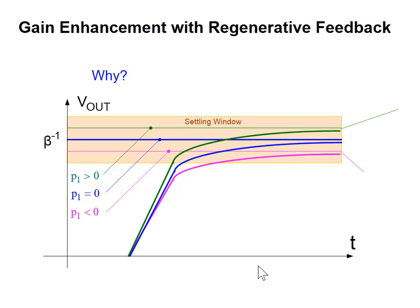Usually you have a situation where you would like the amplifier to settle to 1/beta — that's what the output is supposed to be with feedback. The feedback gain is 1/beta. So if you put a step in, it should settle to 1/beta. And here's a settling window: you can say it will be settled if it's within a certain bound of the final desired value. This might be 1% below 1/beta. Settling time is defined as the time it takes to get into that settled window.